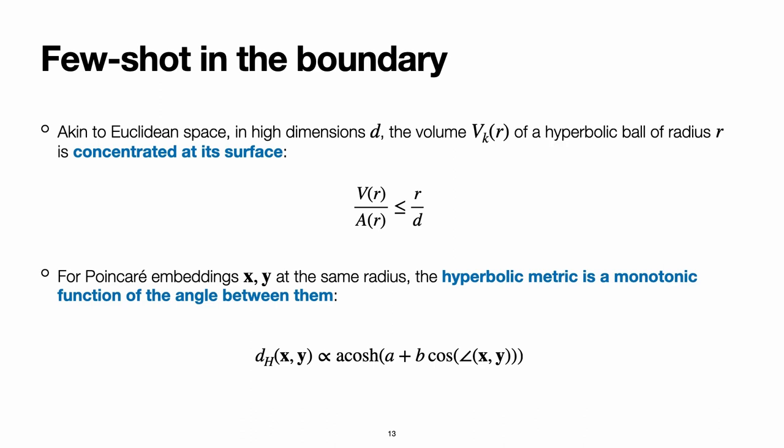And the second fact is that if we have two embeddings lying in the Poincaré ball roughly at the same radius, or numerically at the same radius, then the distance, and thus the similarity between them, becomes a monotonic function of the angle that separates them. And this is precisely what also happens in Euclidean space.